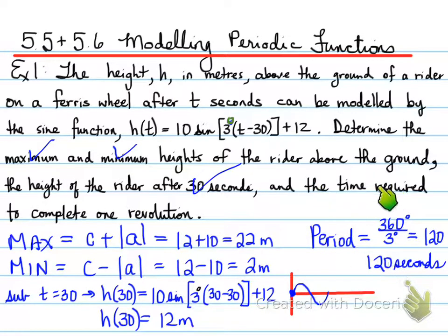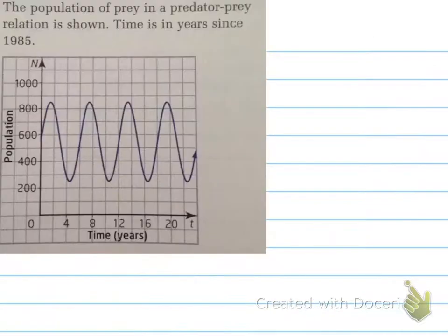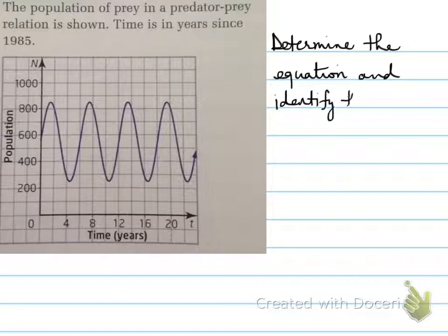Now be careful, I may ask you how many minutes is required, so you would convert this to minutes. Moving forward, here's another example. The population of prey in a predator-prey relation is shown. Time is in years since 1985. You're asked to determine the equation and identify the variables.